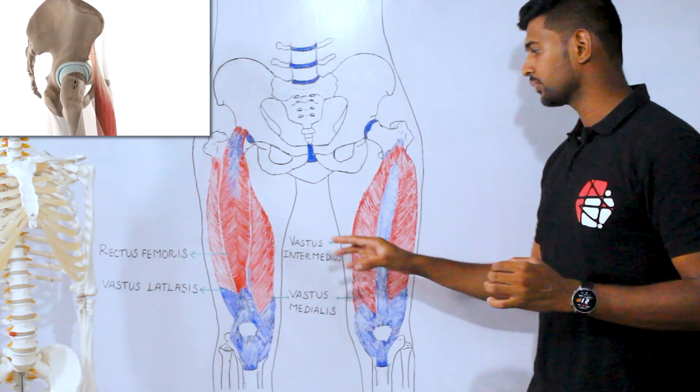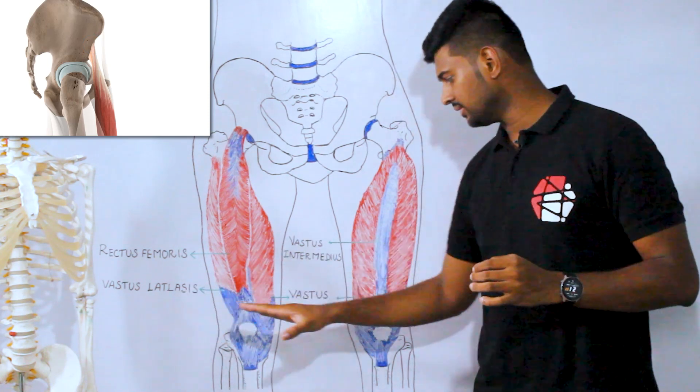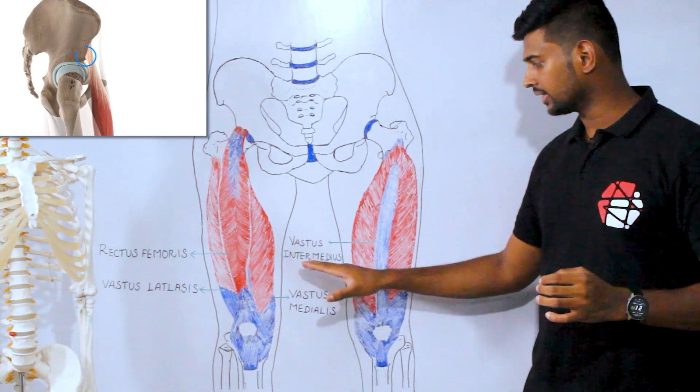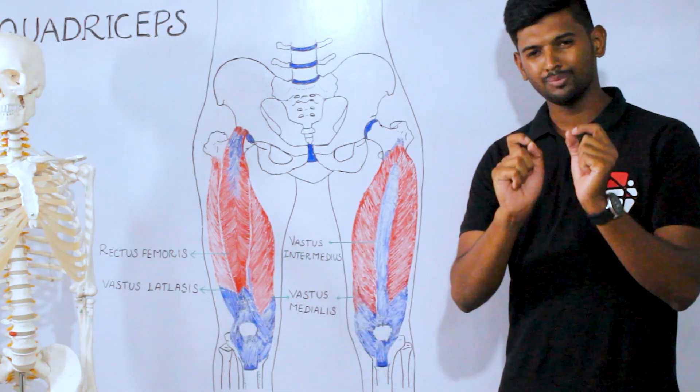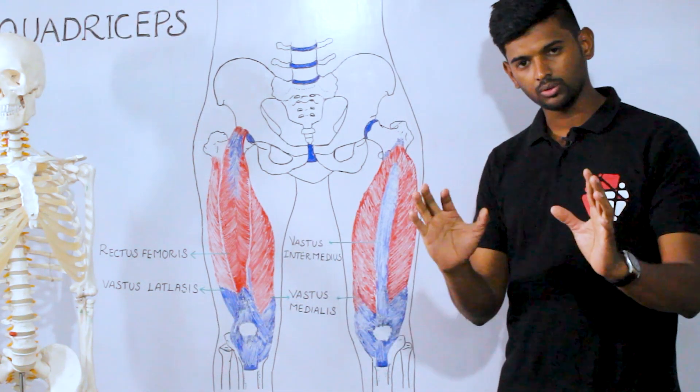The other three muscles — vastus lateralis, vastus medialis, and vastus intermedius — simply attach over the femur.